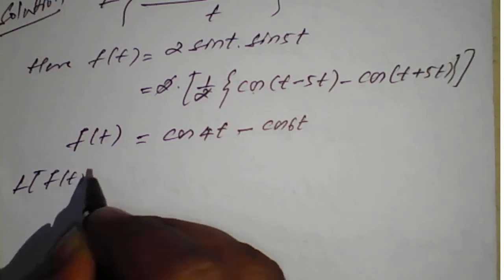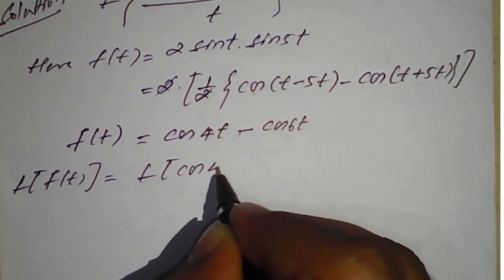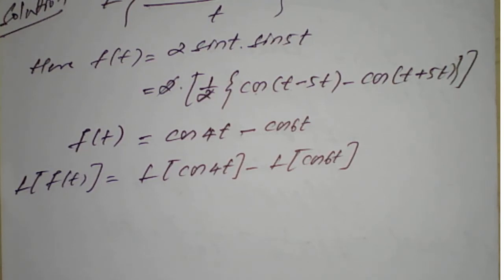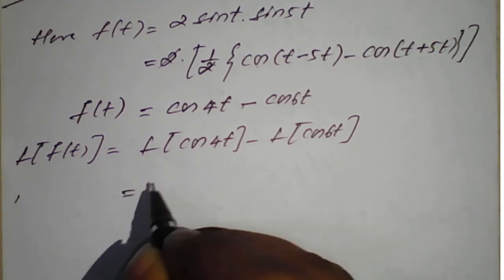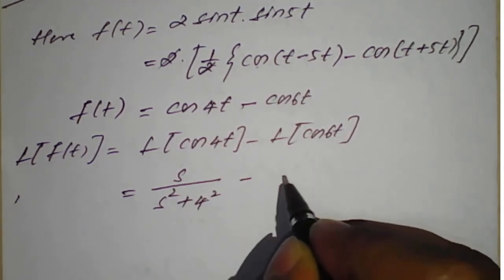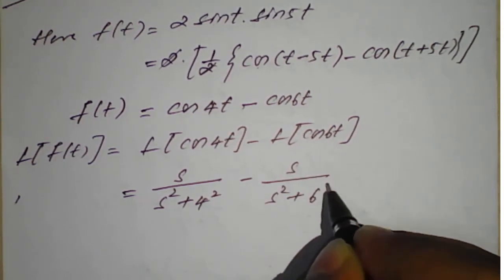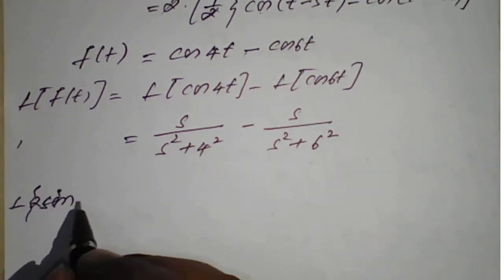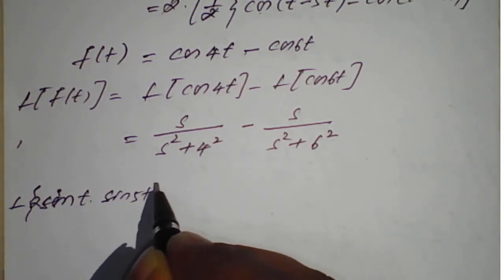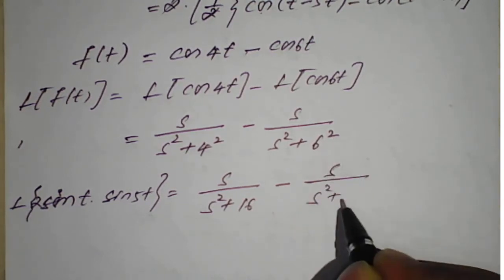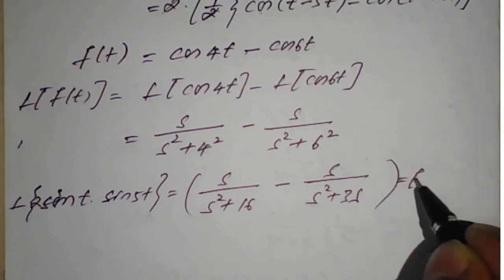Therefore, Laplace of F(t) = Laplace of cos(4t) − Laplace of cos(6t) = s/(s²+16) − s/(s²+36). This is our F'(s), the Laplace transform of 2·sin(t)·sin(5t). Now, since the original question has division by t, we apply Property Number 3, which means one-time integration.